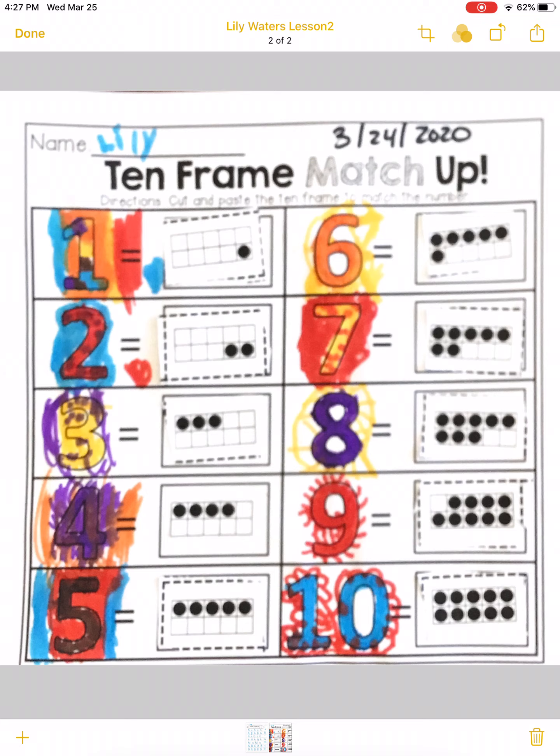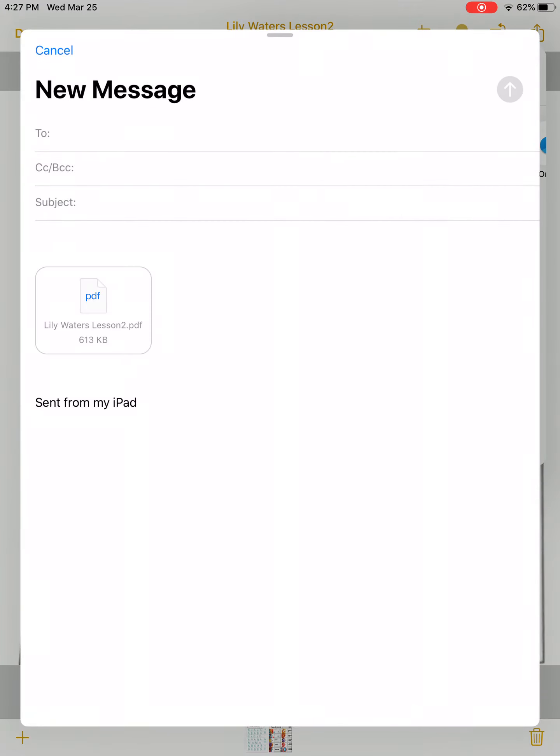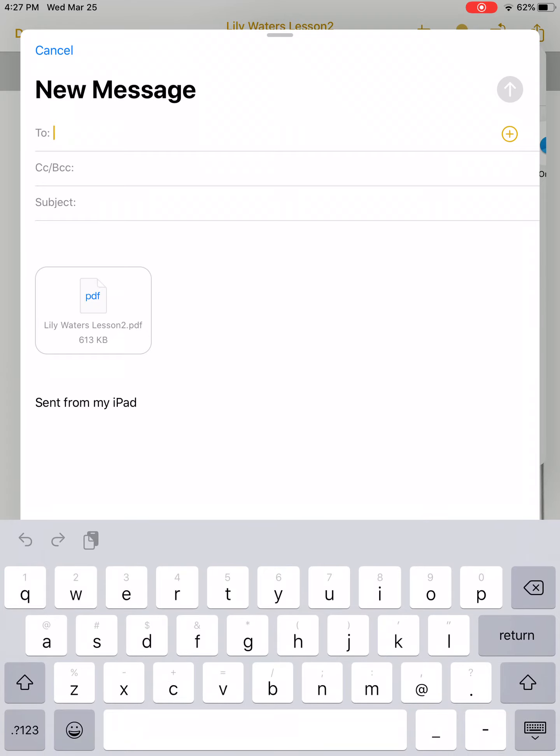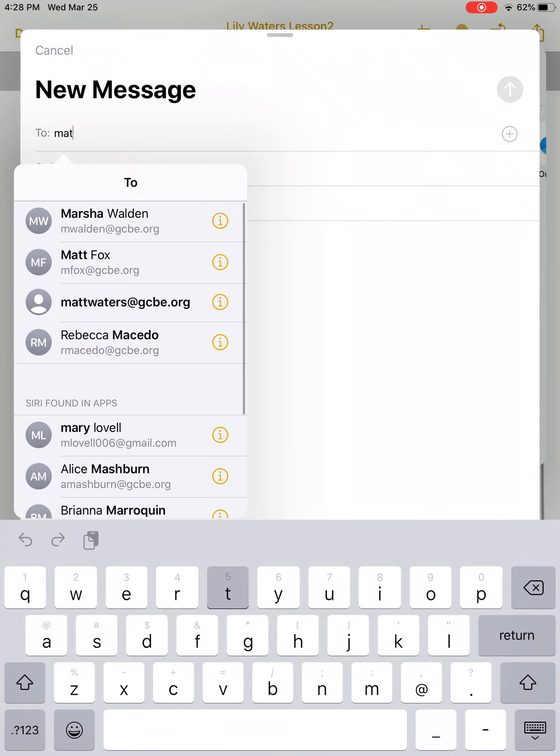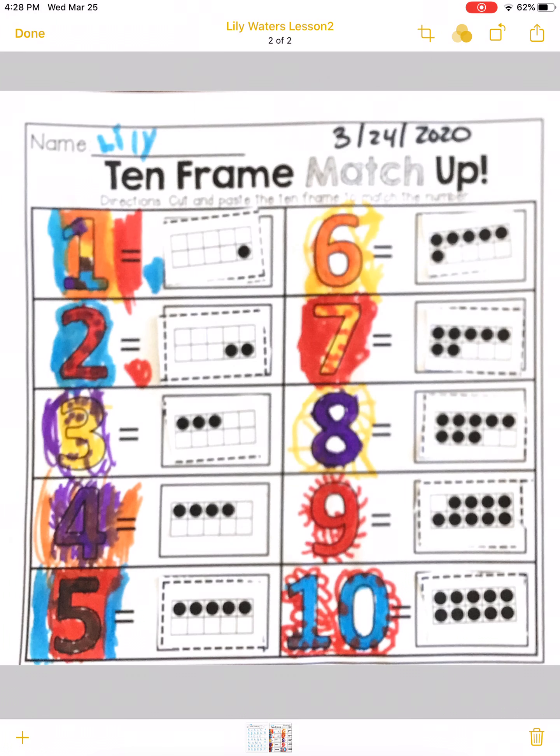Okay, so now how do we send that to the teacher? The square with the arrow pointing up, that's your upload button. If you click that in the top right, you have the option for clicking on Messages, which is like a text message, or you can click on Mail and email it to your child's teacher. So all you have to do is type in their email address, give it a subject name, hit the send button, and it might take a few seconds to upload.